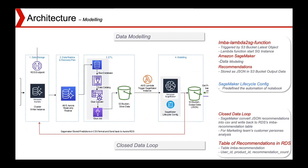Hello, I'm Song Yan and I'll talk about data modeling. A Lambda function will be triggered by a new object in the S3 bucket, which starts a SageMaker instance. Amazon SageMaker performs the data modeling for machine learning. The recommendations are stored as JSON in the S3 output data bucket. SageMaker lifecycle configuration predefines automation on startup. For the closed data loop, SageMaker converts JSON recommendations into CSV and writes them back to the RDS InBAR recommendation table for marketing team and customer analysis. The table includes user ID, product ID, and recommendation score. Next is James's part.